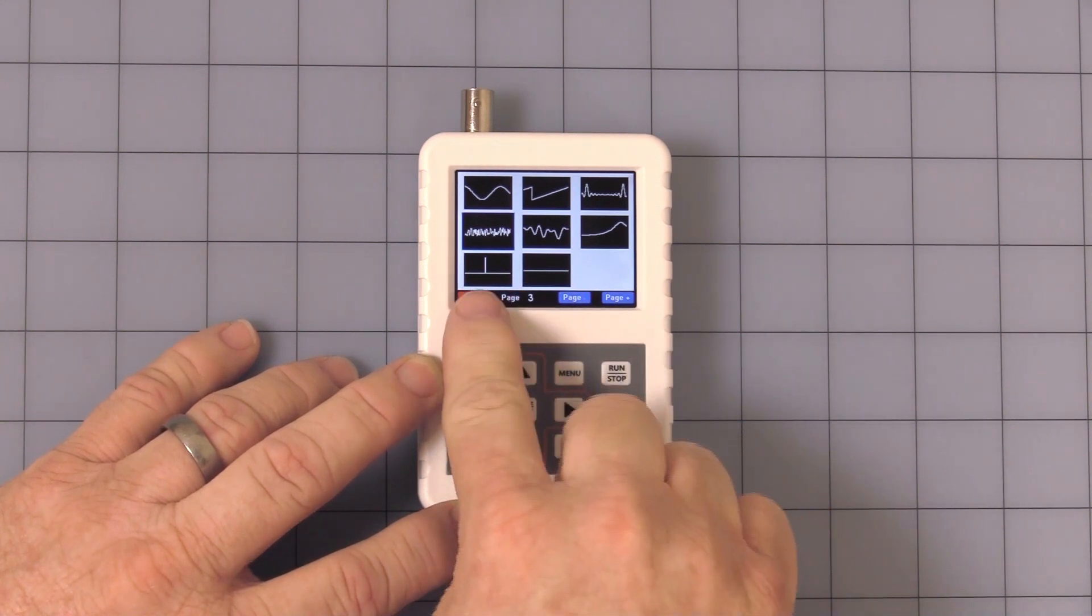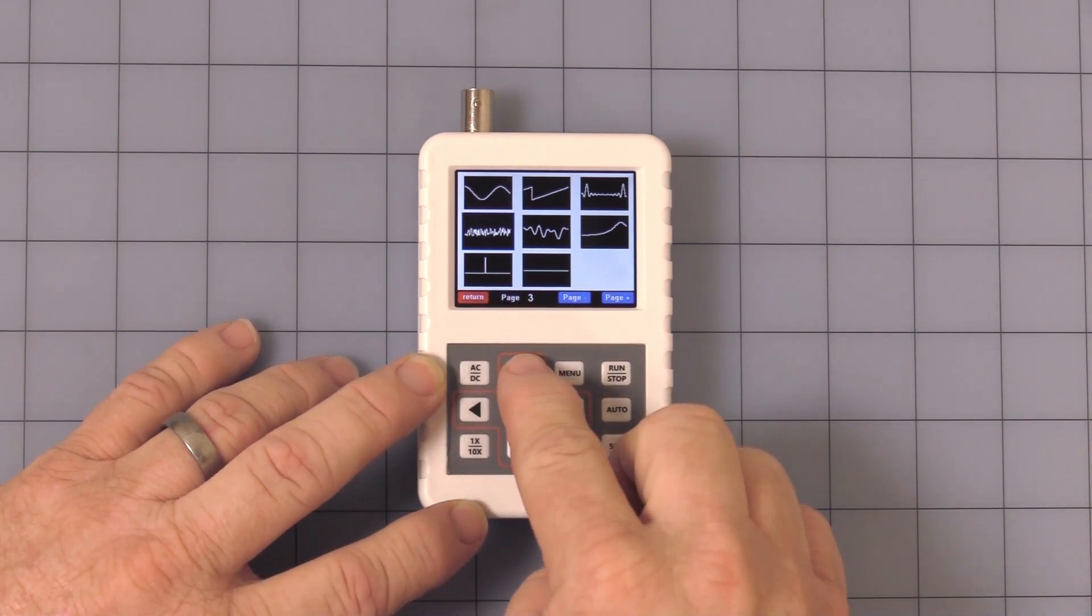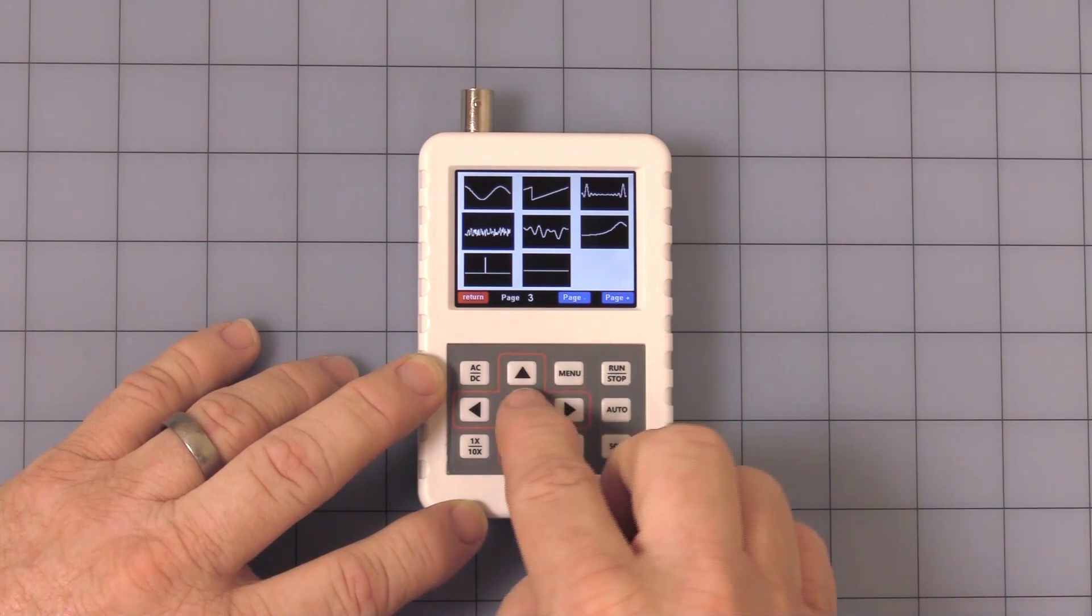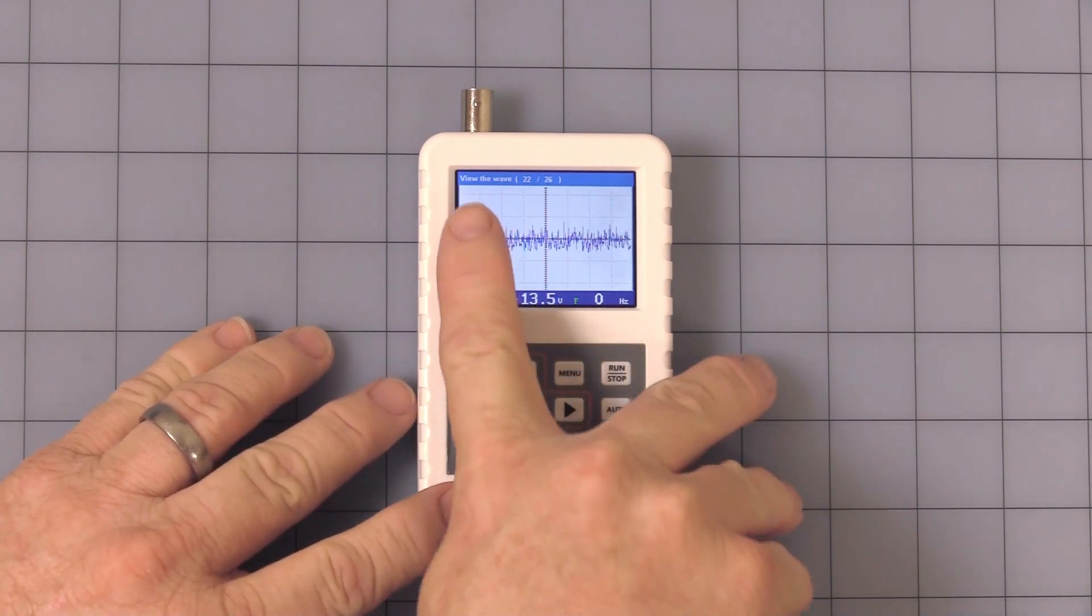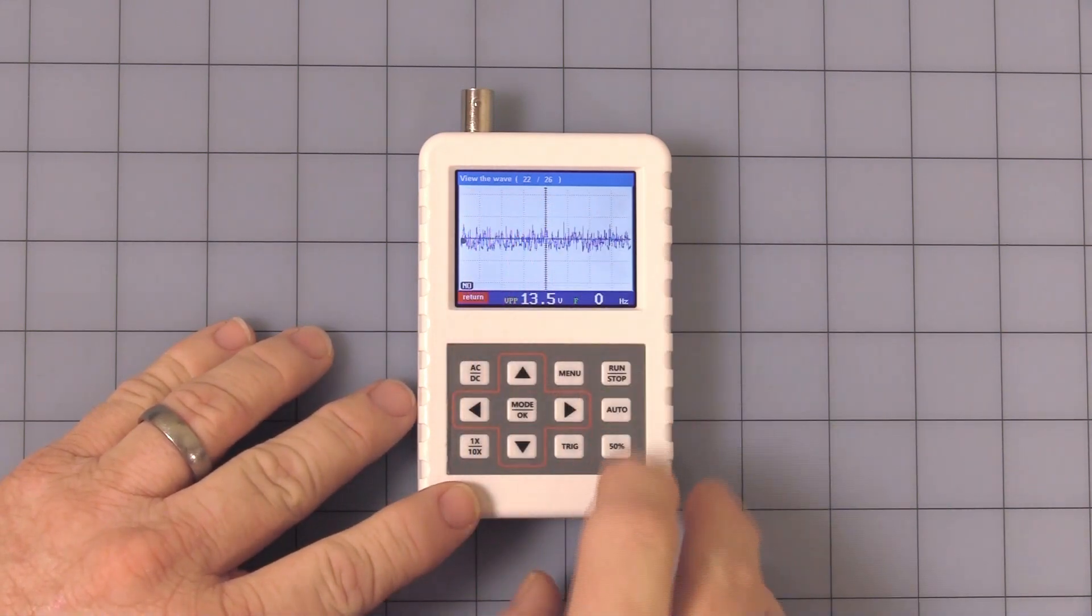This is the one I just did. If you see something else you want, you can highlight it, click OK, and there's the saved. This is your viewing wave, you know, 22 of 26, so nice little feature there.